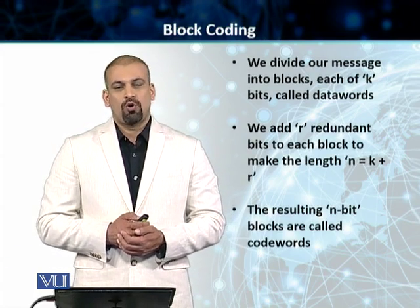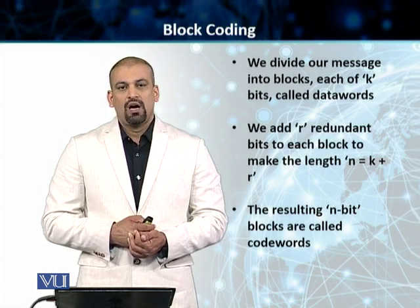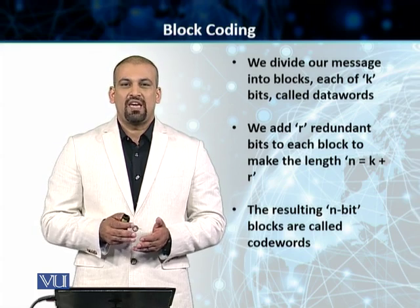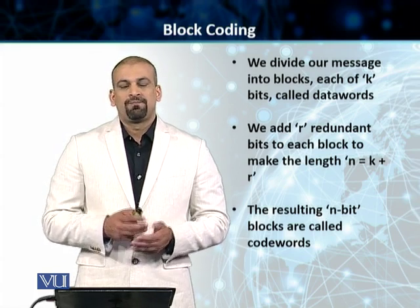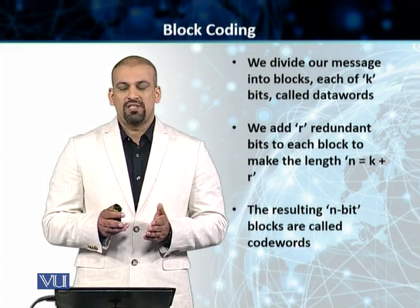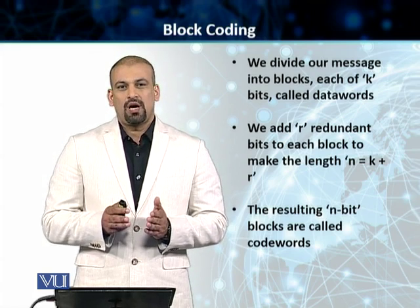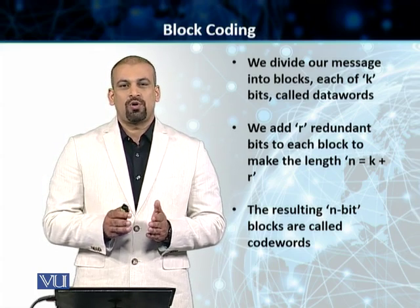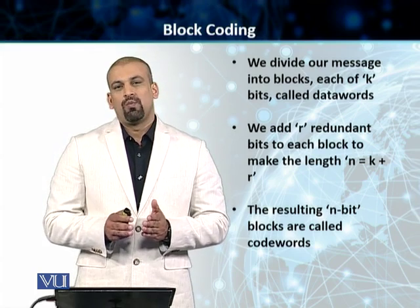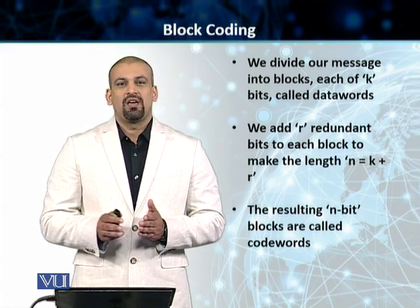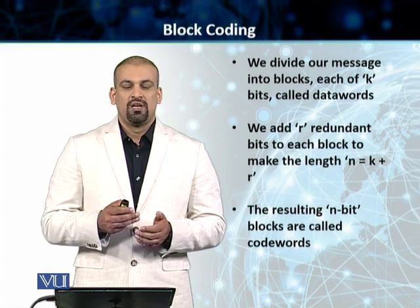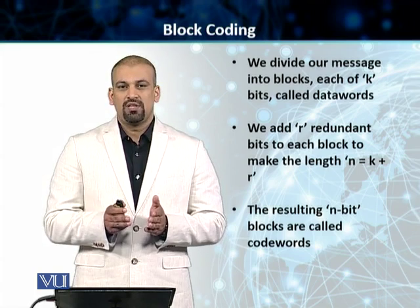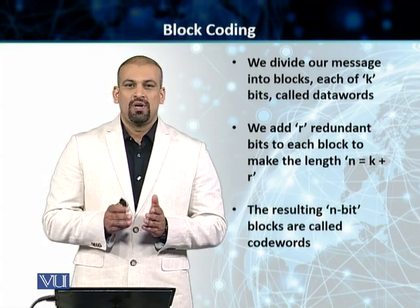In the case of block coding, the first step is we divide our message that we need to send into blocks of k bits each. It doesn't matter how long the message is — we choose a certain number k and we divide our message into blocks of k bits each. We'll talk about where this k comes from and how we choose it in the discussion of encoding techniques.